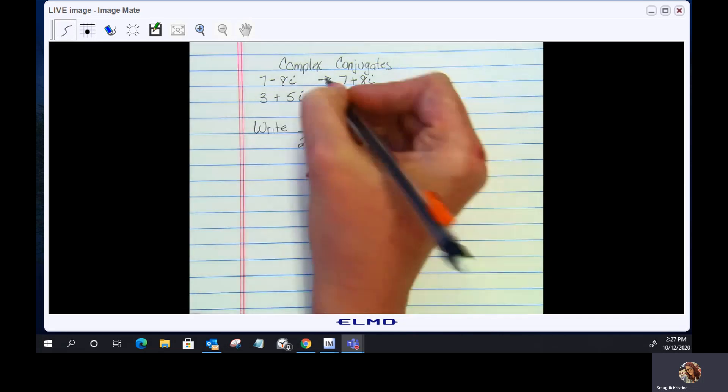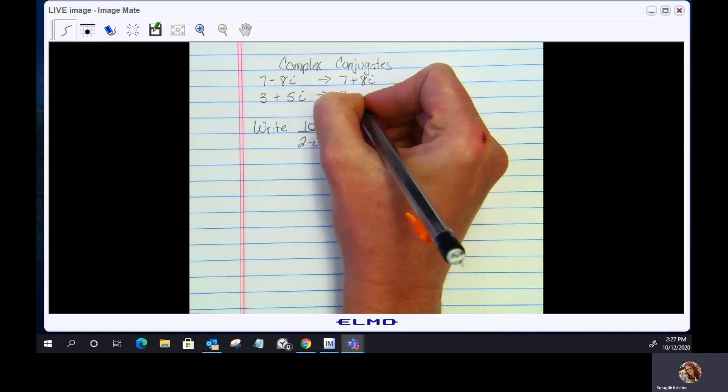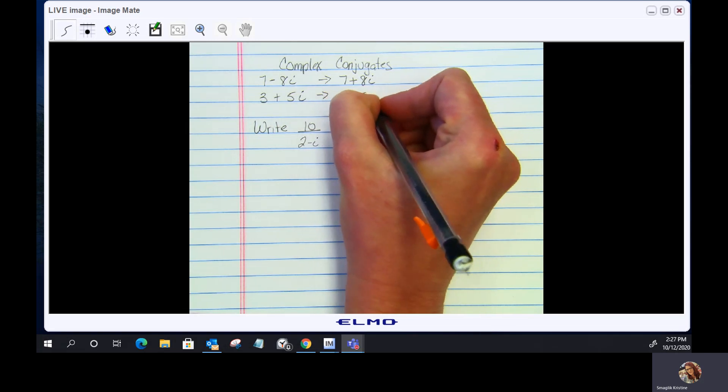Here we have 3 plus 5i. The complex conjugate is going to be 3 minus 5i.